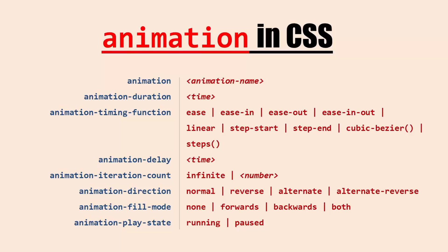These are all the different options in the animation property. First is the animation name, which specifies the name of our animation. Next is animation duration, which we saw in the previous video. We also have animation timing function, which includes ease, ease-in, ease-out, linear, step-start, step-end, and cubic-bezier. We also have steps, which I will explain in this video. Then we have animation delay and animation iteration count — that is how many times the animation should run. You can also define infinite if you want it running indefinitely.